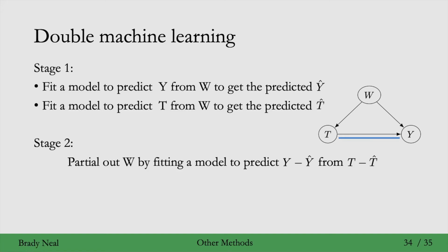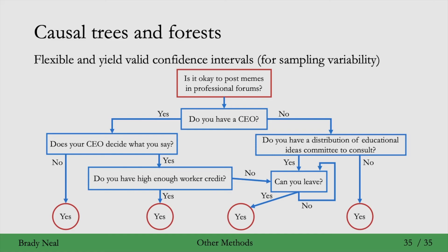And the last other methods that we'll consider are causal trees and causal forests. So you can think of causal trees as an extension of decision trees to estimate causal effects, and here's just an example of a decision tree. It's just like a flowchart. And then a forest is just a bunch of trees together. Decision trees and forests are flexible, but then, more importantly,